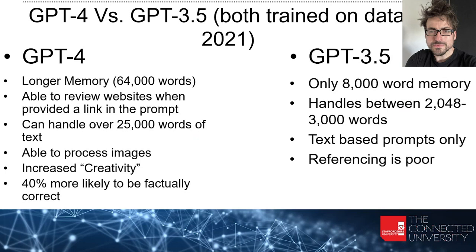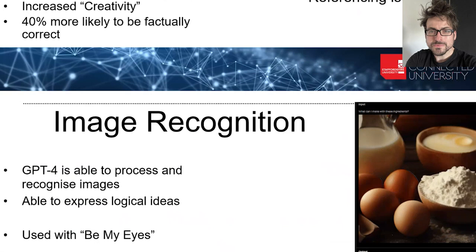GPT-4 can review websites because it has access through to them. It can handle an awful lot of data. They said it is 40% more likely to be factually correct — 40% more than what is always my question back to OpenAI. But one of the things you need to know is this is a paid model. And we are seeing more and more students paying for GPT-4, because it is generating better types of assignments or better help for students.